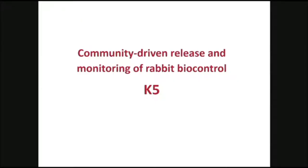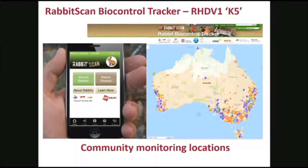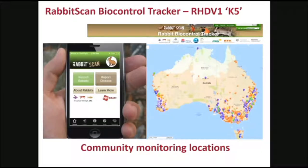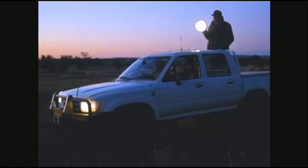I'll give you an example of some of the science outcomes from one of our elements here. We used the rabbit scan program to help deploy the K5 rabbit biocontrol agent last year, which was successful in knocking down rabbit populations by about 50 to 58% in many sections of the country. We used the rabbit scan program to develop a biocontrol tracker and put a call out to the community to ask for sites to nominate for the release of this virus — it's similar to calicivirus and myxomatosis, but somewhat different. About eight or nine hundred people put their hands up, and at those locations we undertook monitoring before and after the release of the virus to measure the outcomes.